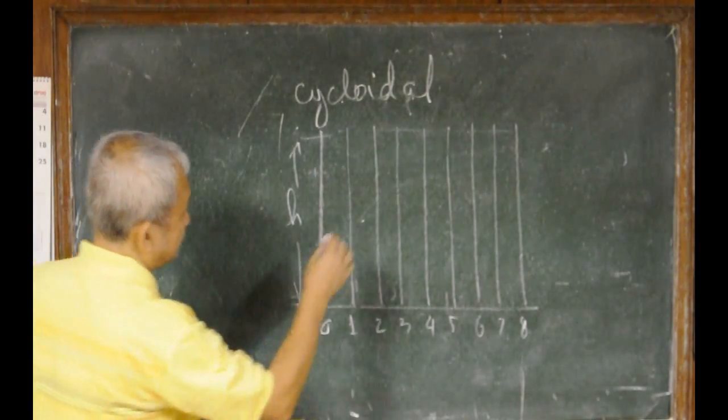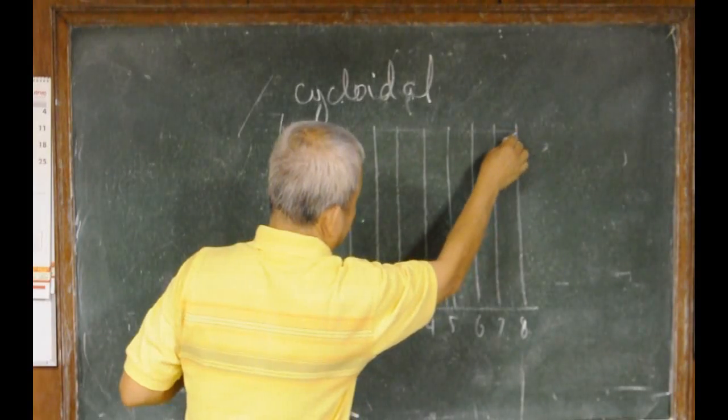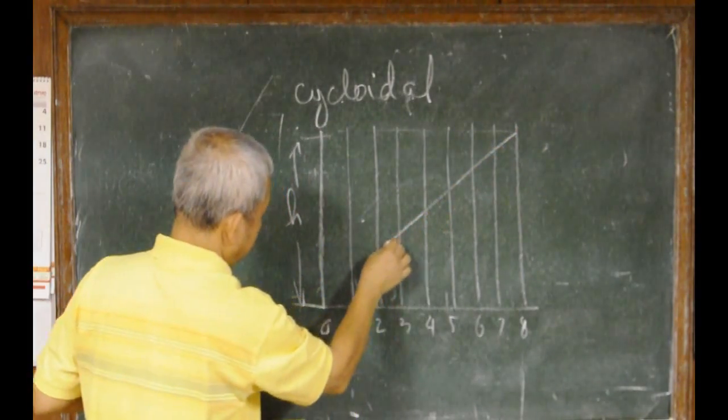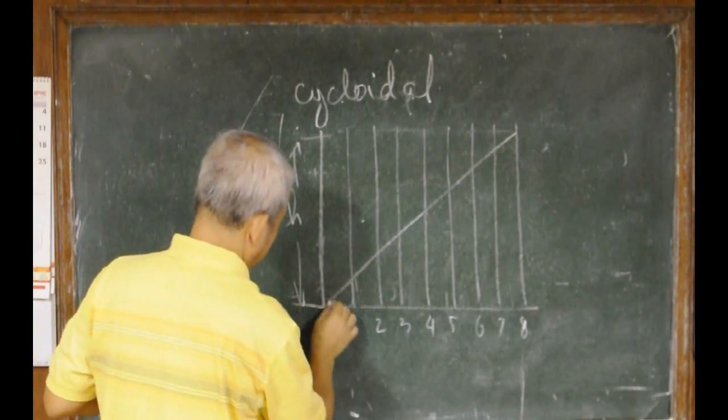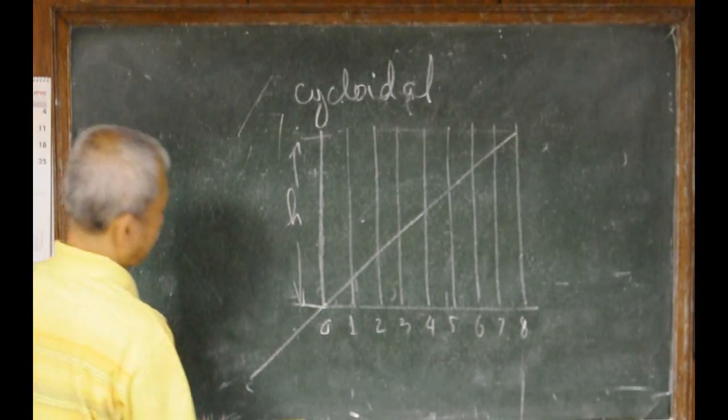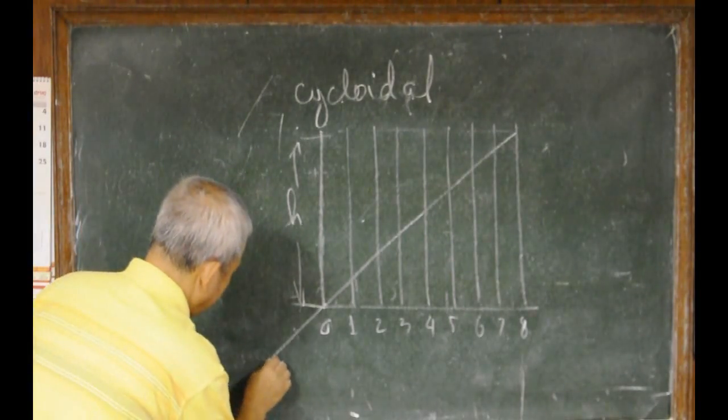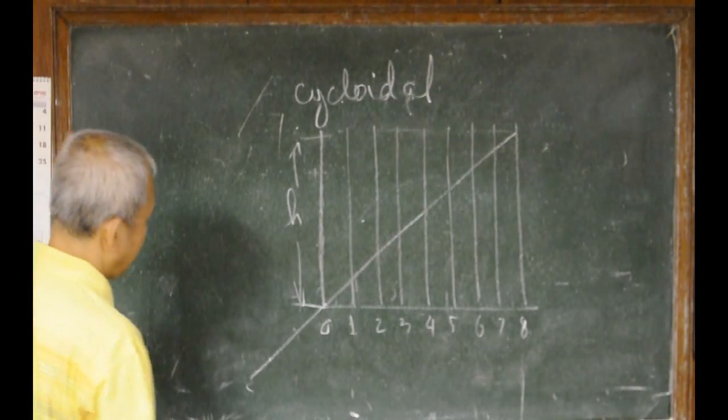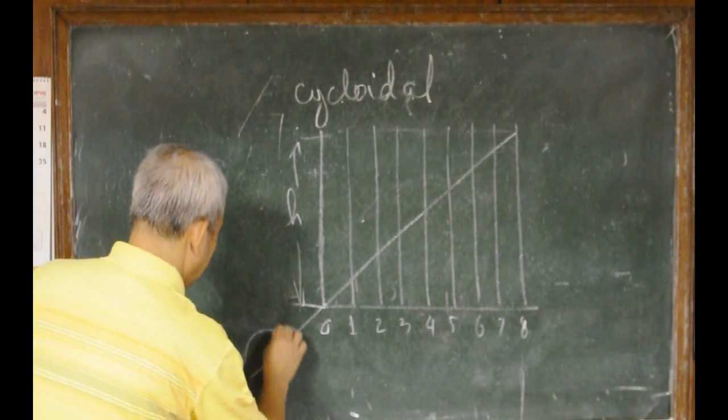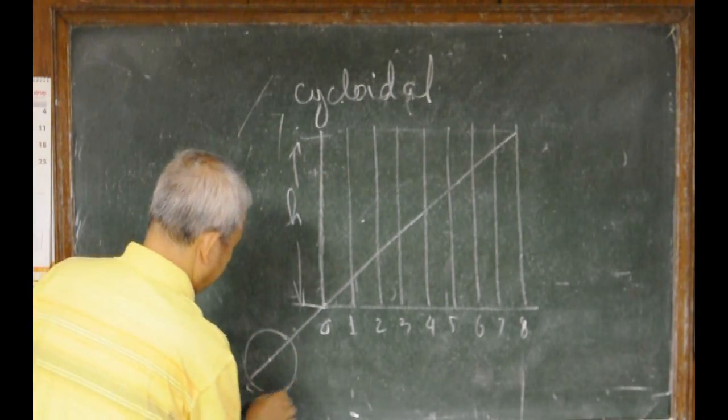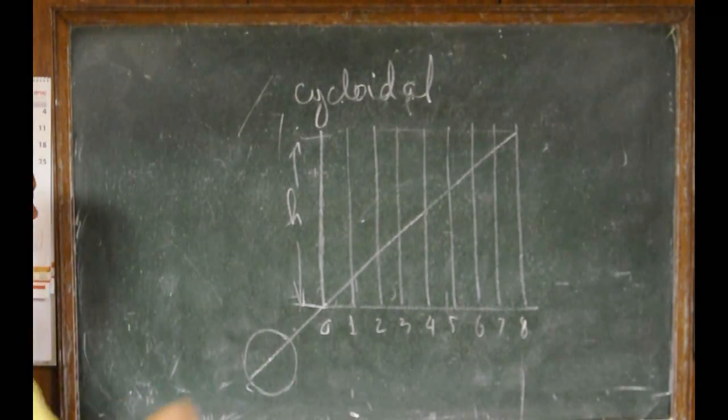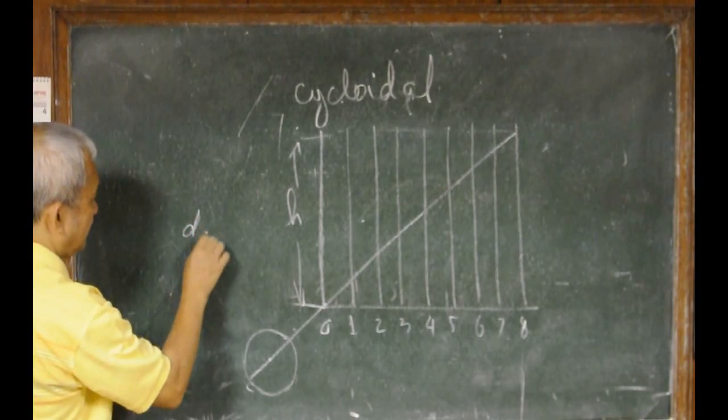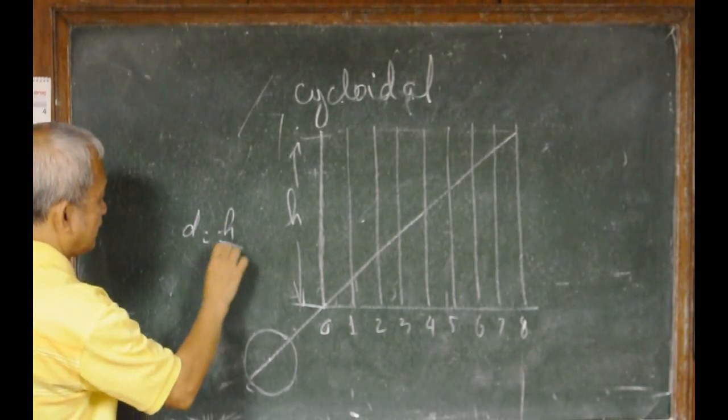What we have to do here is that we will have to make this line on this point and extend this here. And at any point here, any location here, we have to make this circle. This circle has a diameter of h over pi.